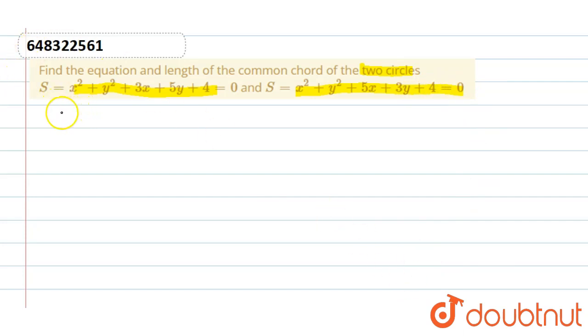Find the equation and length of the common chord. First equation: x square plus y square plus 3x plus 5y plus 4 equals 0. Second equation: x square plus y square plus 5x plus 3y plus 4 equals 0.